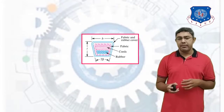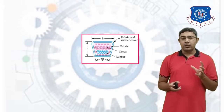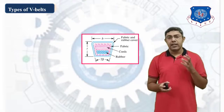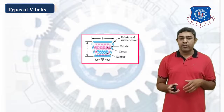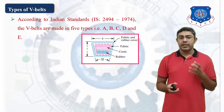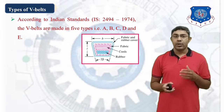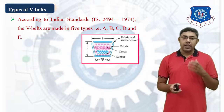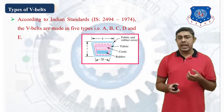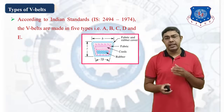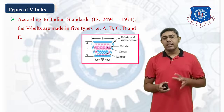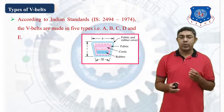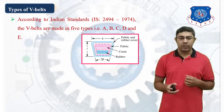Consider how to make the V-Belt Drive according to standard. There are 5 types of V-Belt. According to Indian Standard IS 2494-1974, V-Belts are made in 5 types: A, B, C, D, and E.